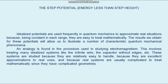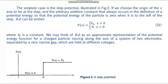Idealized potentials are used frequently in quantum mechanics to approximate real situations because, being constant in each range, they are easier to treat mathematically. The results obtained for these potentials illustrate a number of characteristic quantum mechanical phenomena. An analogy is found in electromagnetism, where idealized systems like the infinite wire and the capacitor without edge effects are studied because they are excellent approximations to real ones. The simplest such case in quantum mechanics is the step potential, illustrated in figure 3.